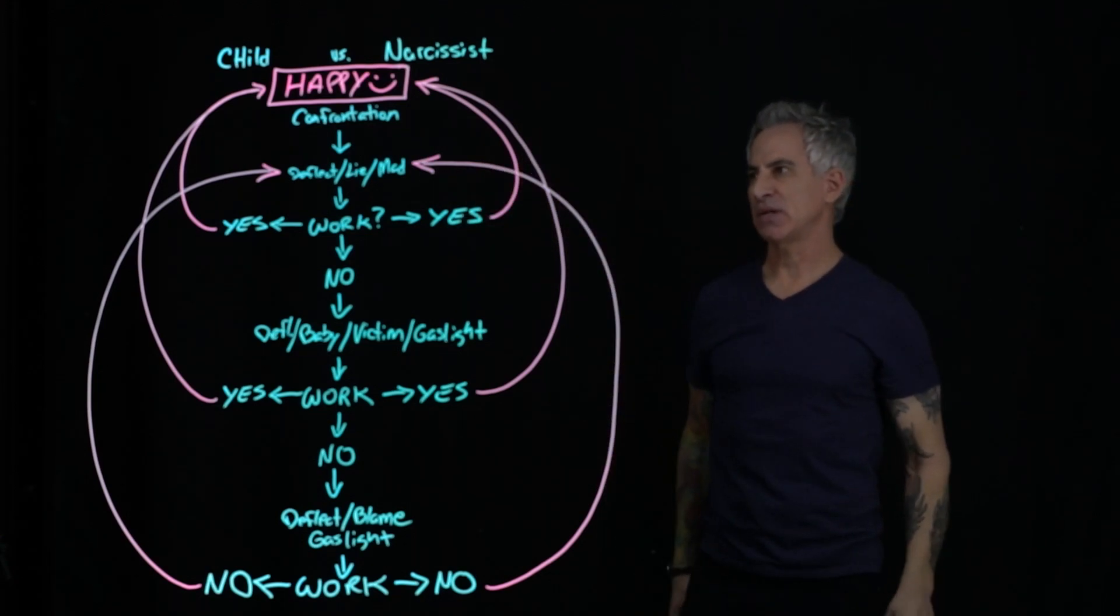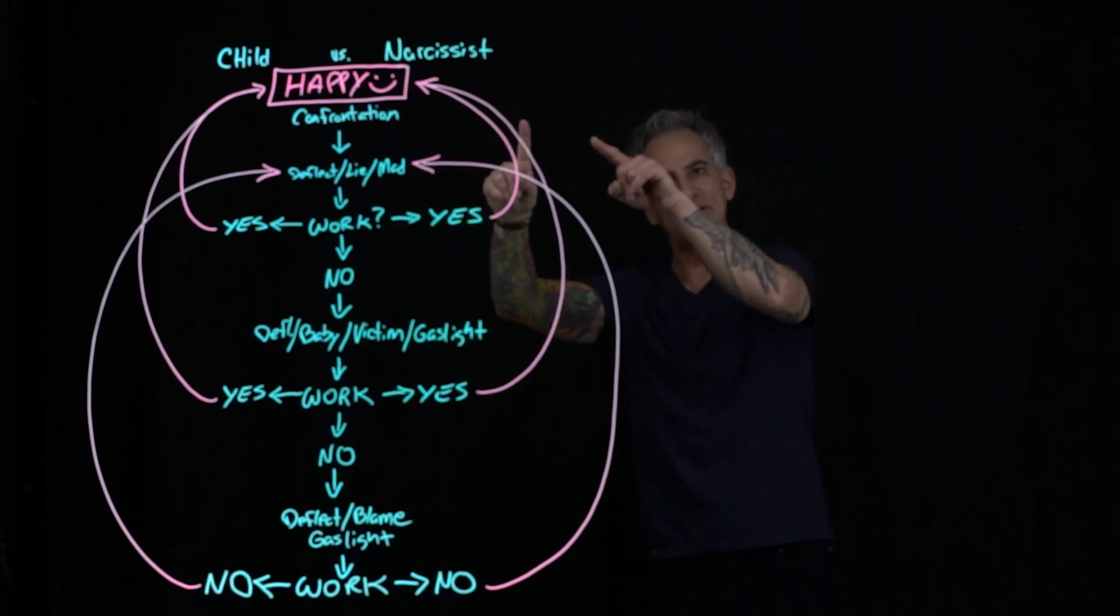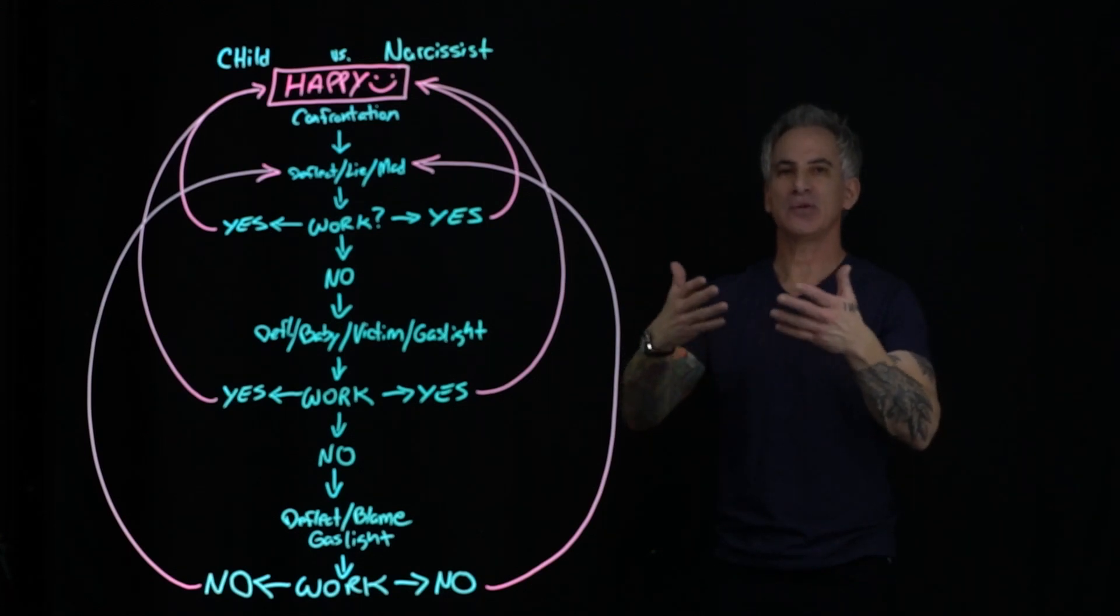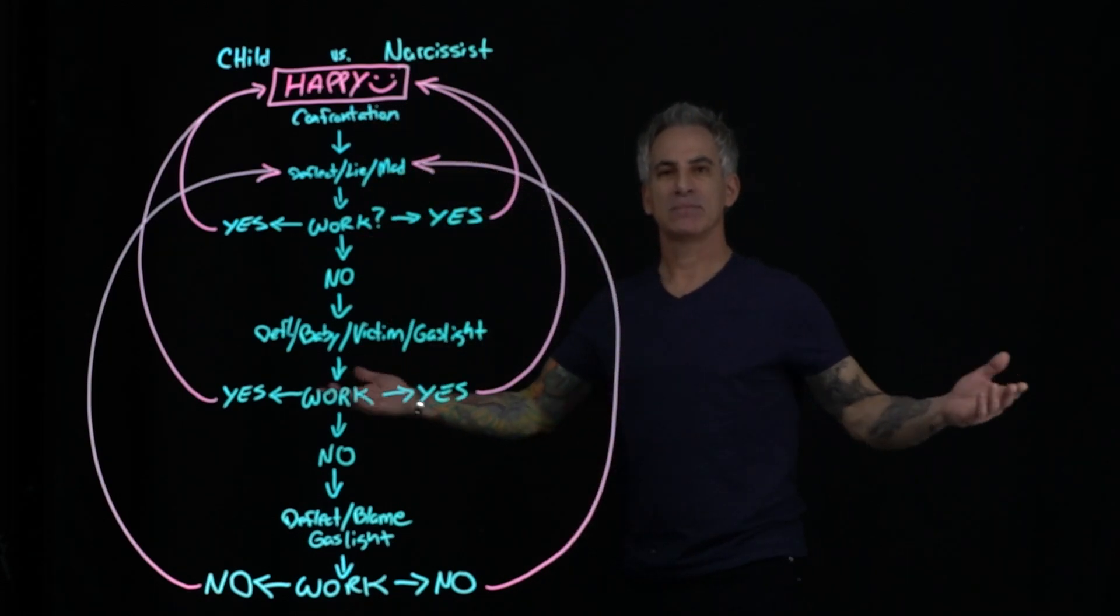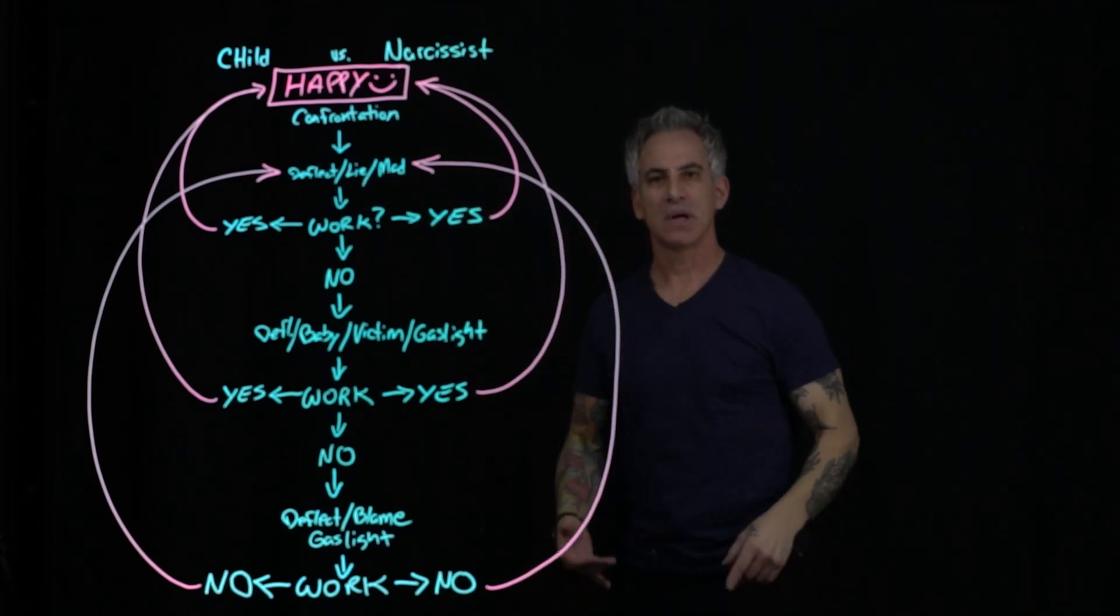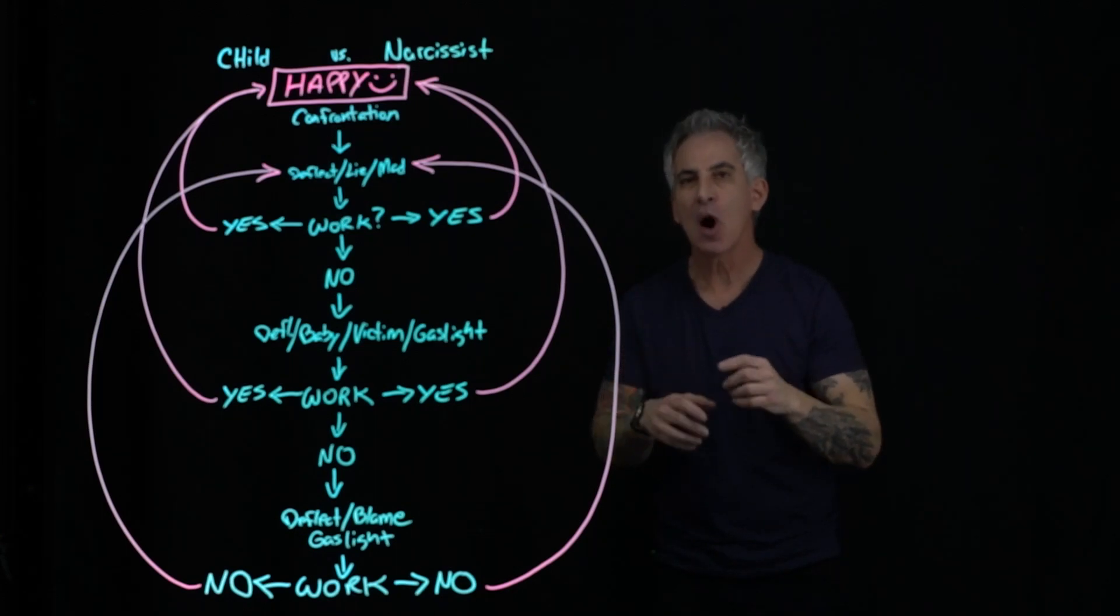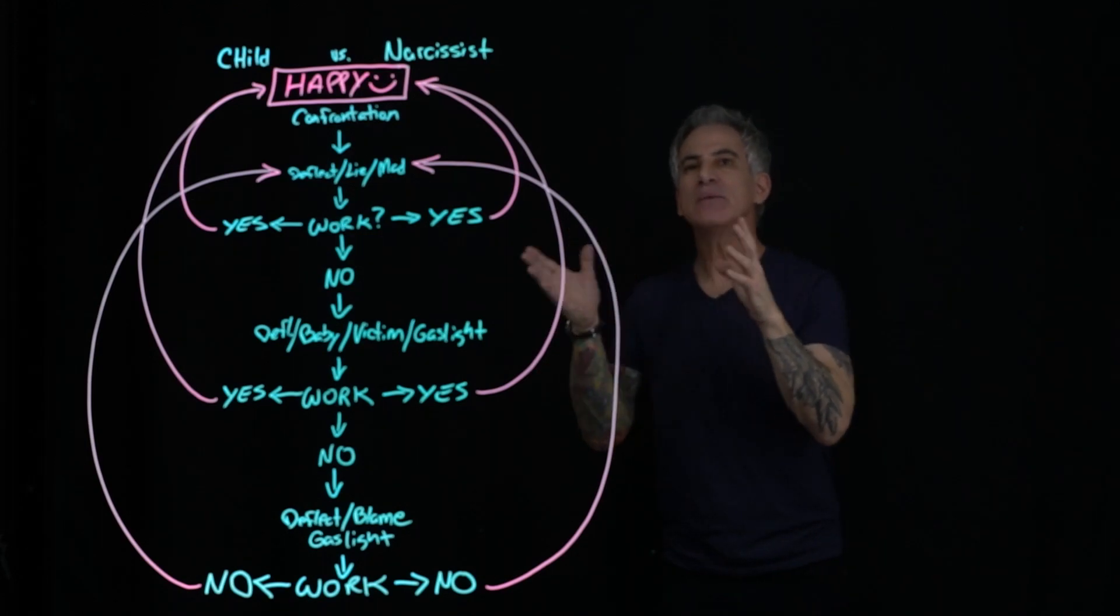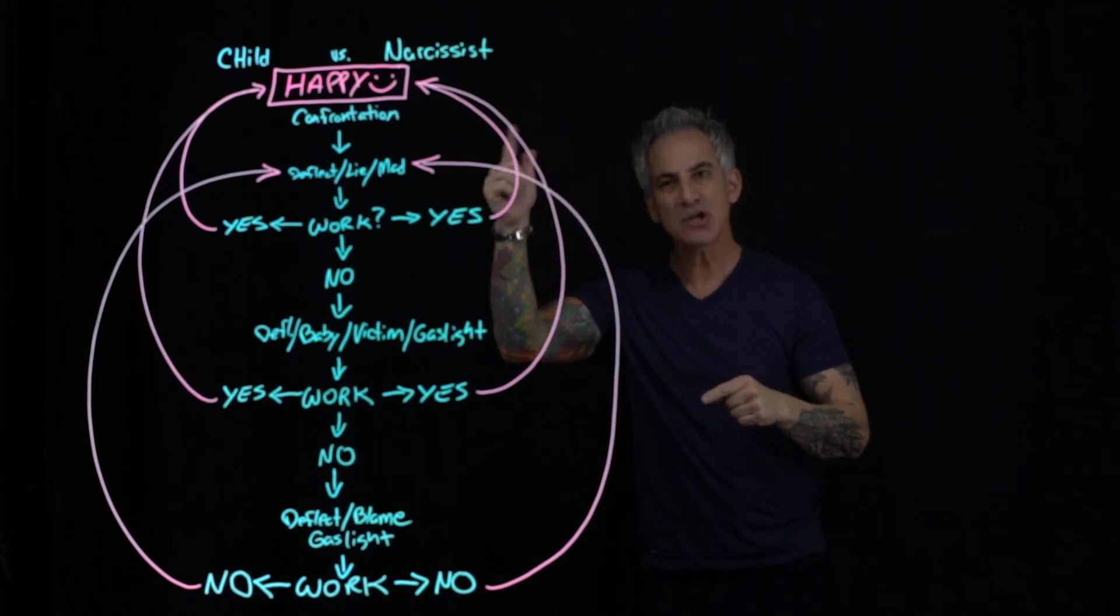So we have the child versus the narcissist. In the pink is what happens when the yeses or nos filter back in to create this cycle. The blue is basically the cycle. Allow me to introduce the child versus narcissist flowchart. Happy - child and narcissist, happy. Confrontation. What does the child do? Lies, deflects, does everything that it can so that it can't get caught. What does the narcissist do? It lies, blames, shames everyone else except taking the responsibility of the confrontation or challenge, just like a child.